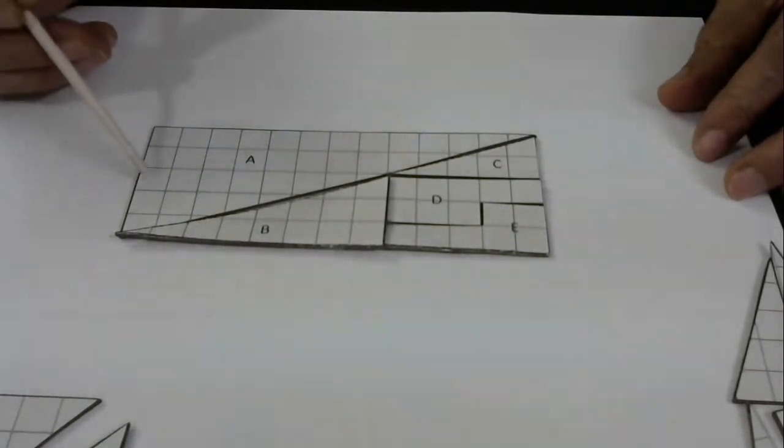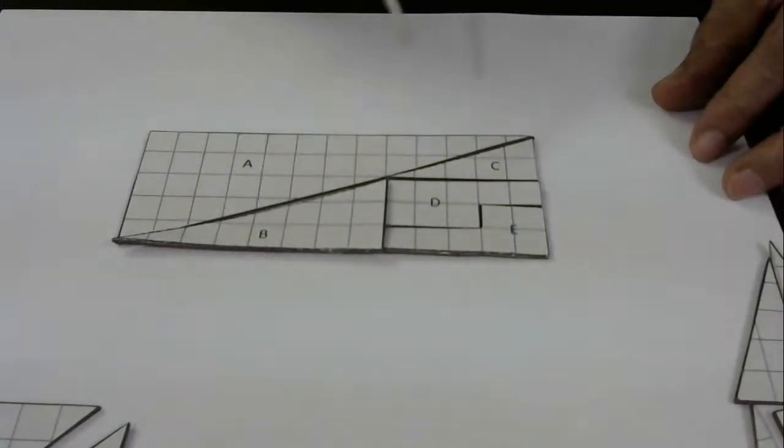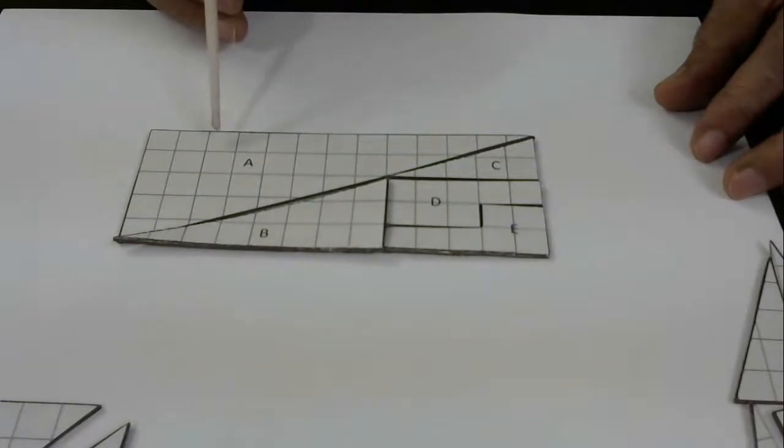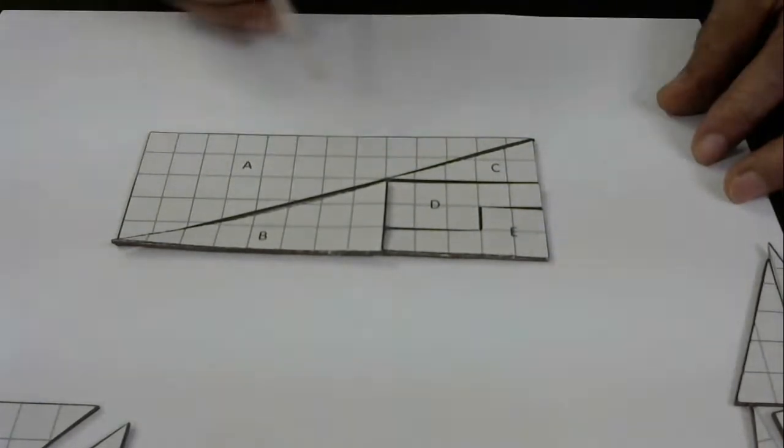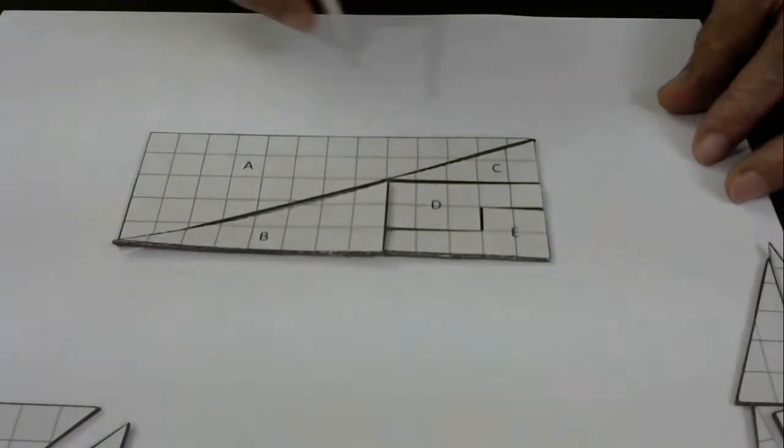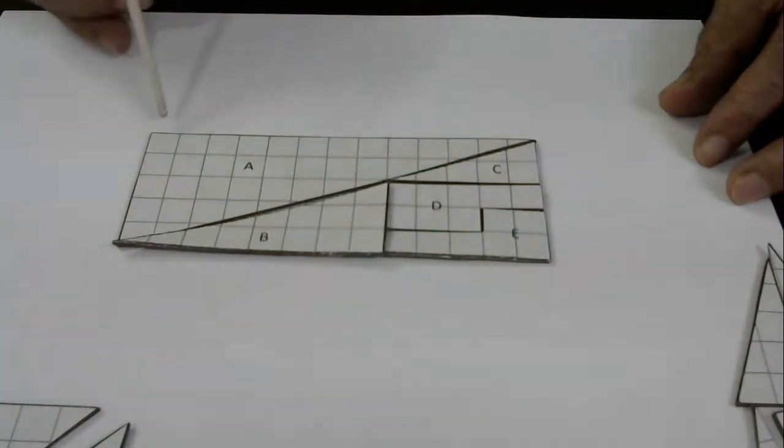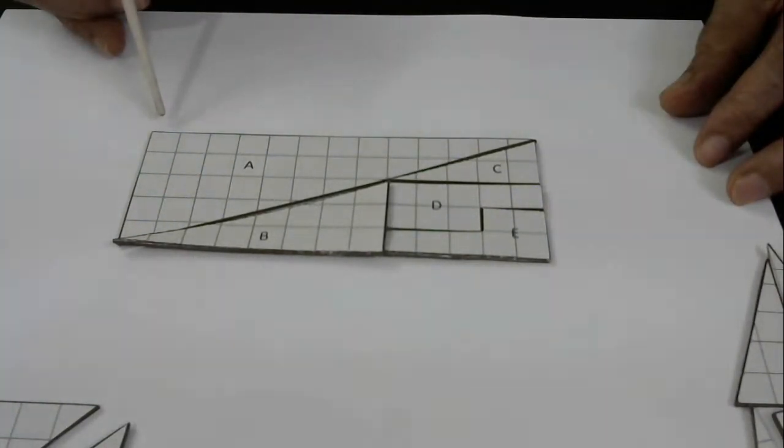So 1, 2, 3, 4, 5 is the height and 1, 2, 3, 4, 5, 6, 7, 8, 9, 10, 11, 12, 13. So 13 times 5 equals 65. That means these pieces together should have 65 squares.